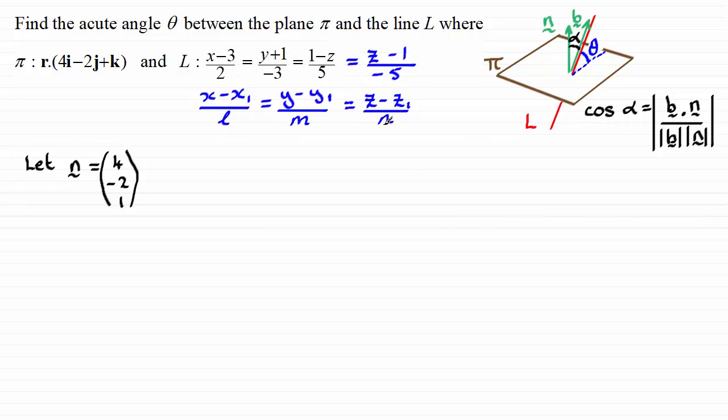So a vector in the direction of the line L can be written as a column vector as (2, -3, -5).